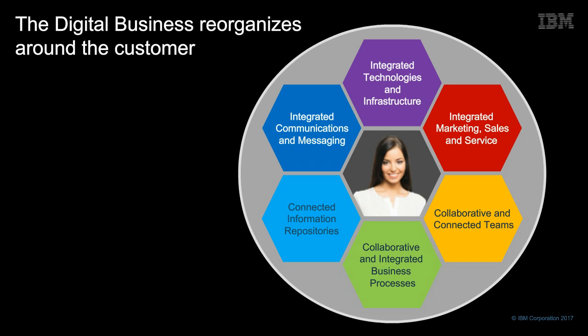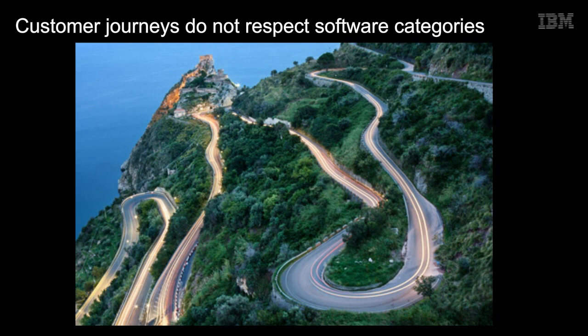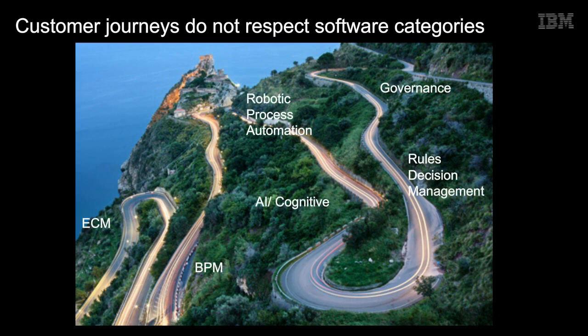The last time I saw Rob make a presentation, he had a slide which suggested the customer journey doesn't respect these software categories. You're going to need ECM, business process management, robotic process automation, AI, cognitive, rules, decision management, and governance. All of these are now in play as you build digital business applications. So what has IBM done to serve customers and provide what they need in this new world?